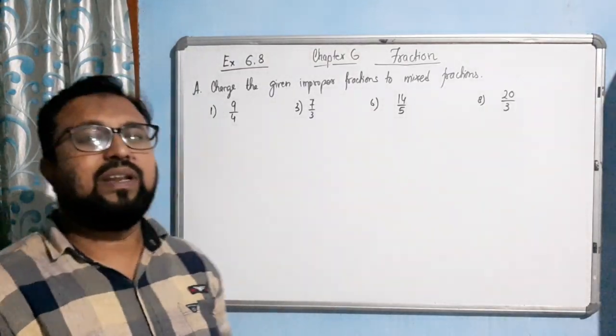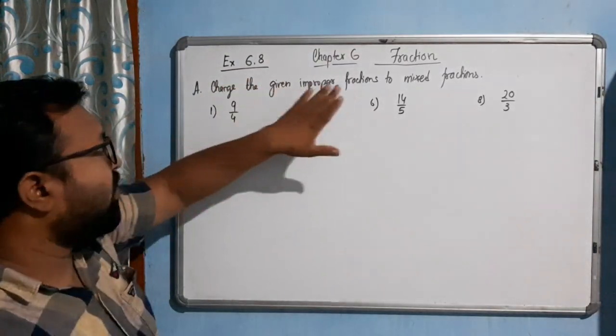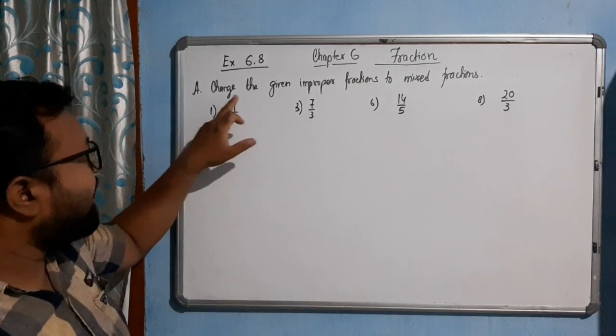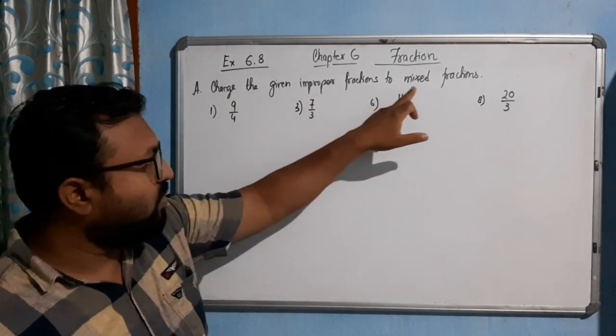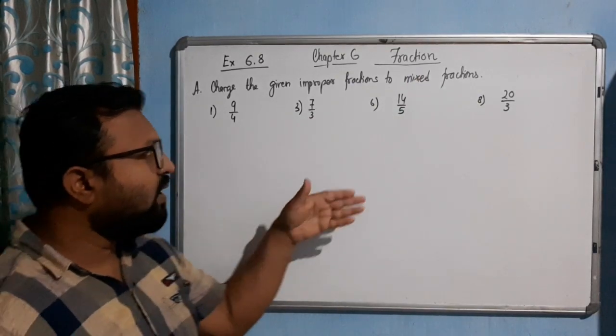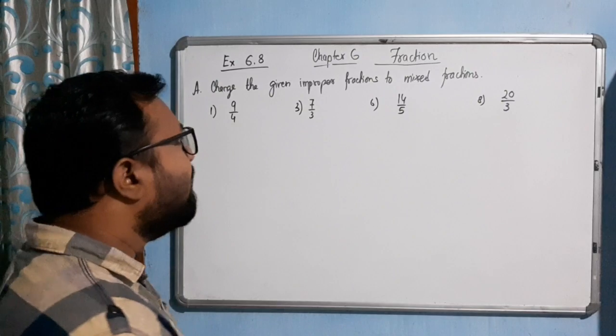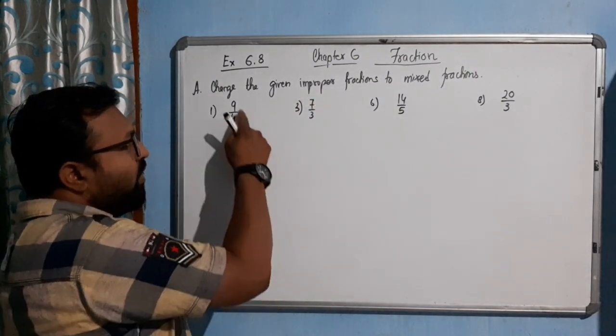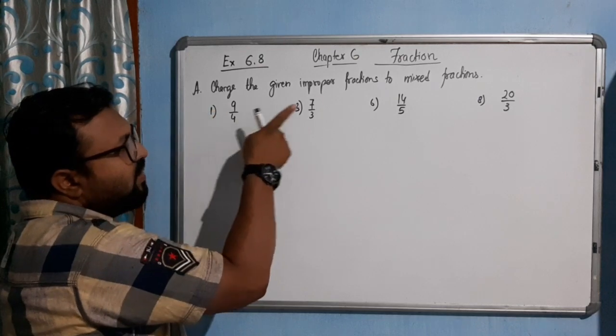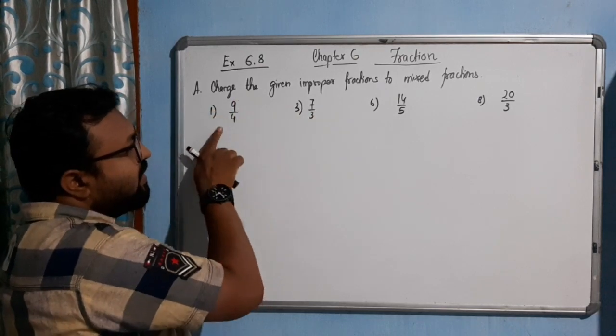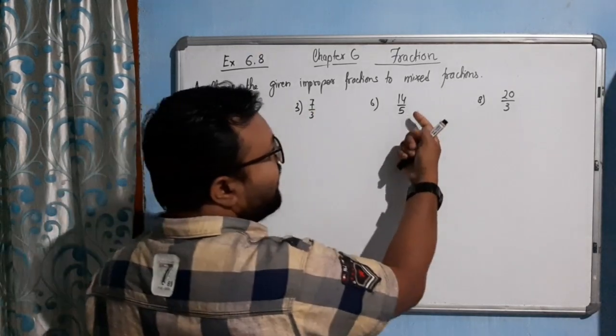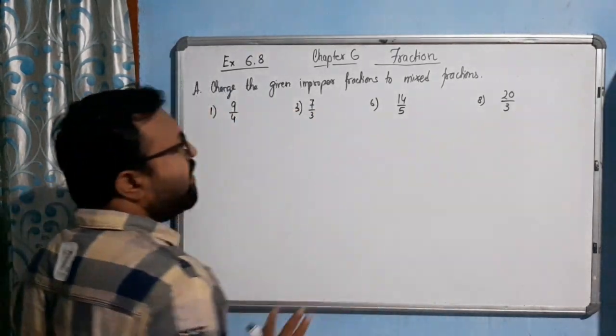Hello students, now come to the next Exercise 6.8 of this chapter on fractions. First question: change the given improper fraction to mixed fraction. As I told you in my earlier explanation, what is an improper fraction? When the numerator is greater than the denominator. Here you can see all the numerators are greater: 7 is greater than 4, 9 is greater than 4, 7 is greater than 3, 14 is greater than 5, 20 is greater than 3. So these are improper fractions.